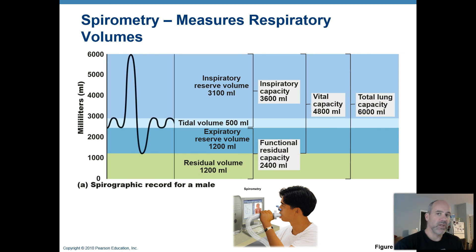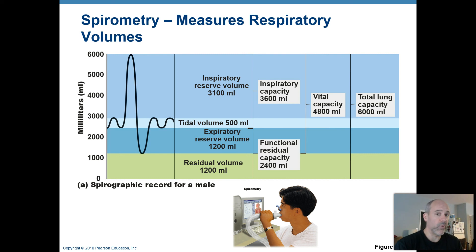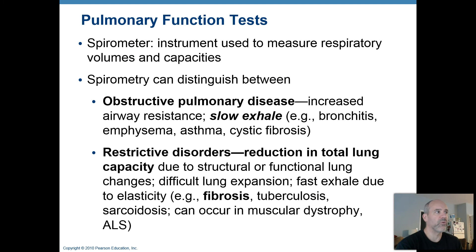This information is useful to respiratory experts and clinicians treating respiratory conditions because deviations from normal volumes can provide clues about what's happening with a patient. A powerful feature of spirometry is that it can distinguish between pulmonary diseases that are obstructive versus restrictive.